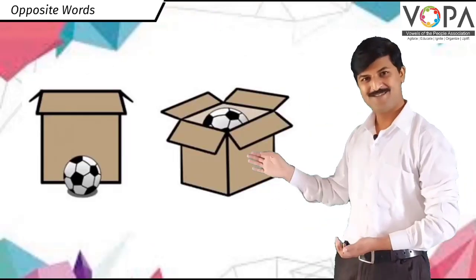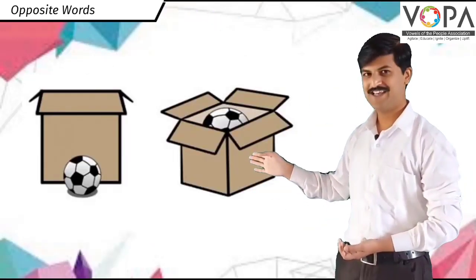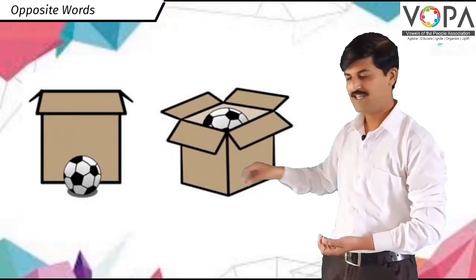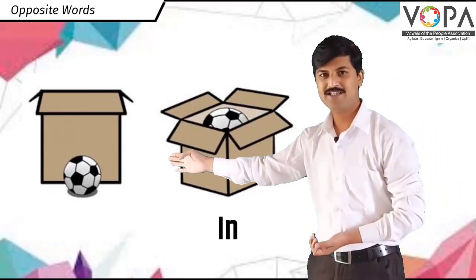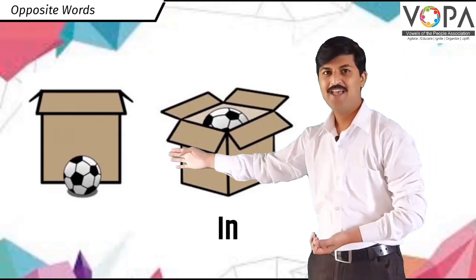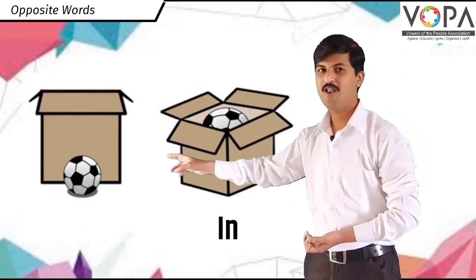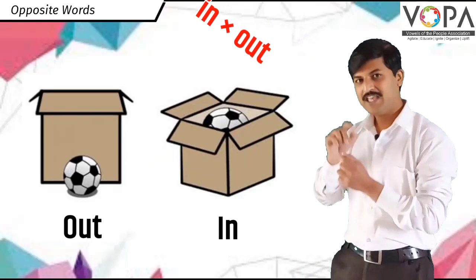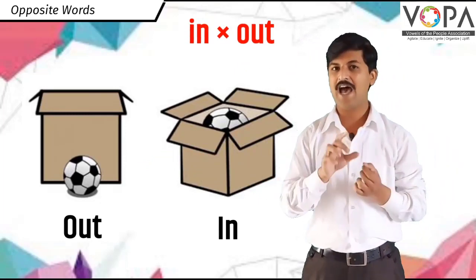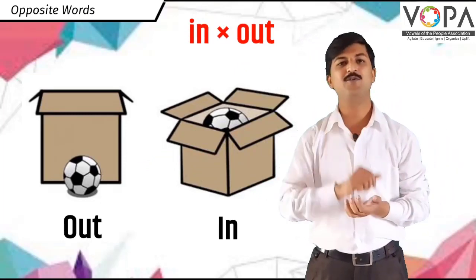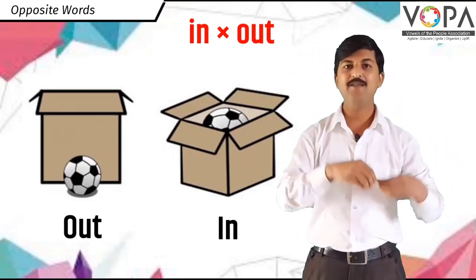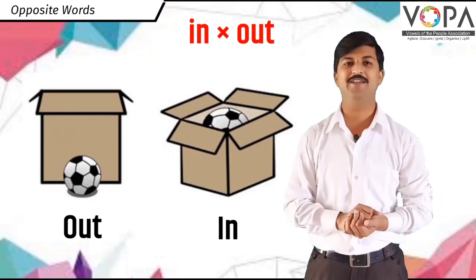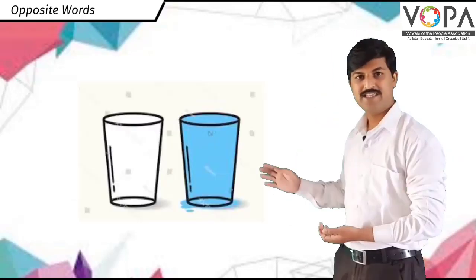See this picture. The ball is out of the box. In and out are two opposite words. In Marathi: aat ani bahir — he dun ulat artha che shabda ahet.